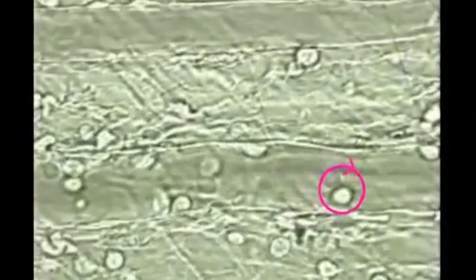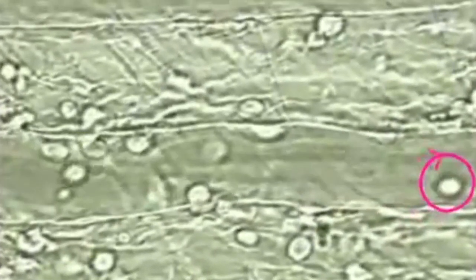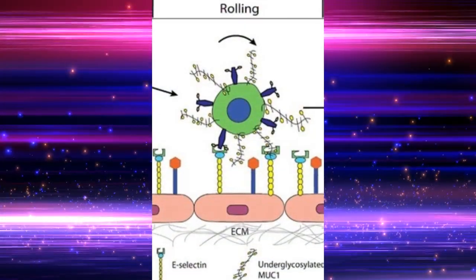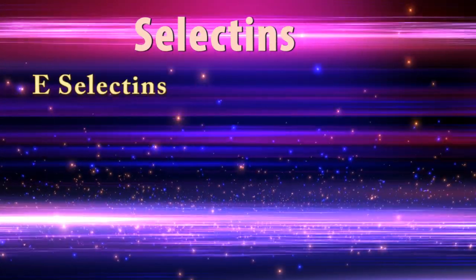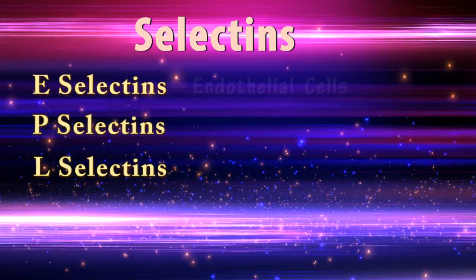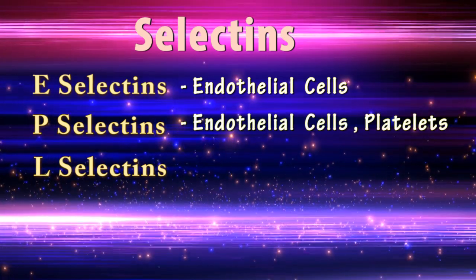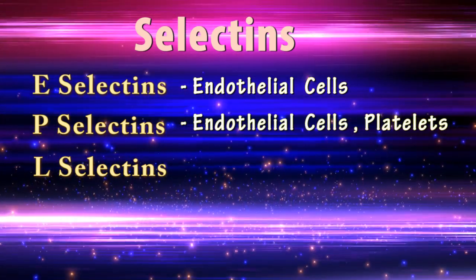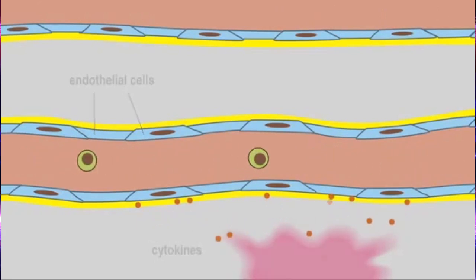Rolling means leukocytes attach loosely to endothelial cells, bind and detach, and thus begin to tumble on the endothelial surface. Rolling is mediated by a family of proteins or adhesion molecules called selectins. There are three types: E-selectin, P-selectin, and L-selectin. E-selectin is found in endothelial cells. P-selectin is found in endothelial cells and platelets. L-selectin is found on the leukocyte surface. The endothelial selectins are typically expressed at low levels or are not present at all on unactivated endothelium.